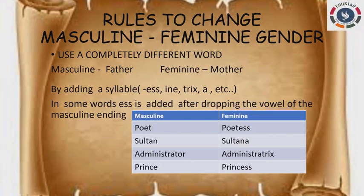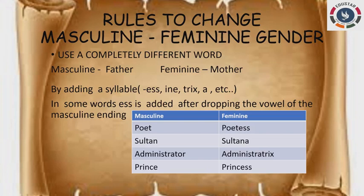The next topic is rules to change masculine to feminine gender. The first rule is: use a completely different word. For example, for masculine 'father,' the feminine gender is 'mother' — a totally different word. And for masculine 'boy,' the feminine is 'girl.' The next rule is: you can add syllables like ESS, TINE, TRIX, or A at the end of the masculine word to change it into feminine gender.